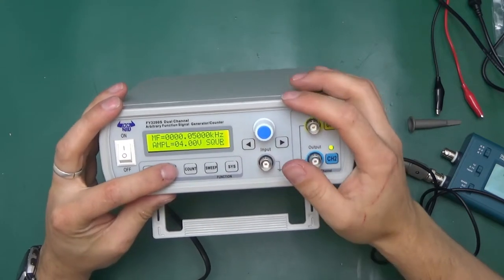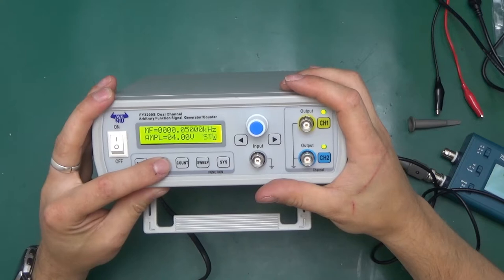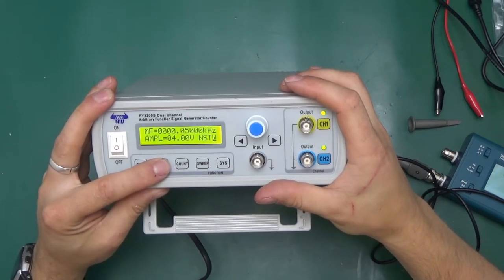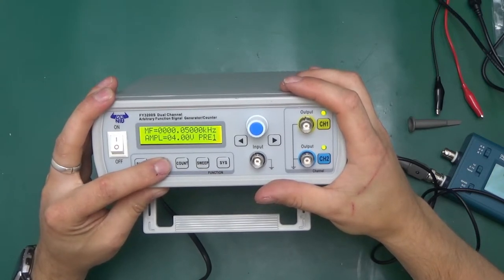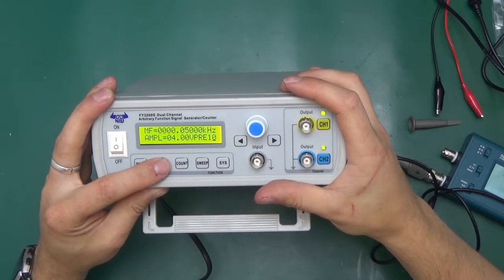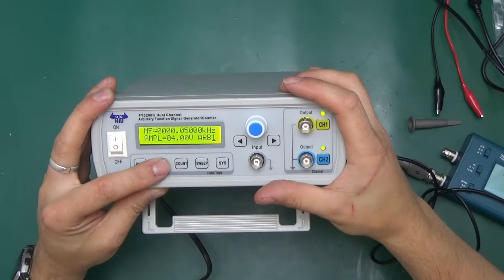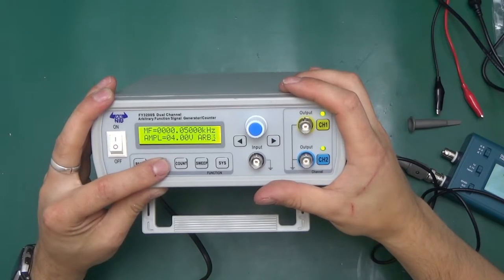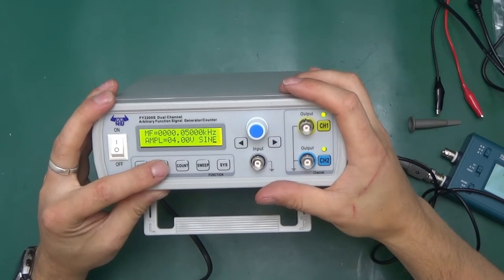What waves have we got? We've got sine, square, pulse, triangle, sawtooth, negative sawtooth, DC, pre one, two, three, four, five. I'm not sure what those pres are. Pre 10 and arbitrary. Arbitrary one, two, three and back to sine.